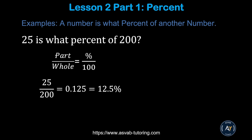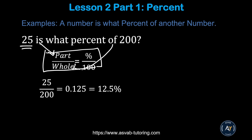Let's learn a formula that helps you solve most percent-type problems. Use: Part / Whole = Percent / 100. Here are the key words: 'is' means part, 'of' means whole. Always keep that in mind. For example: 25 is what percent of 200?